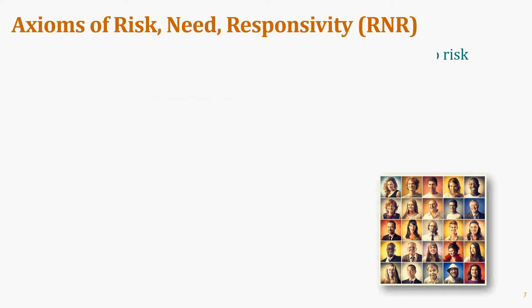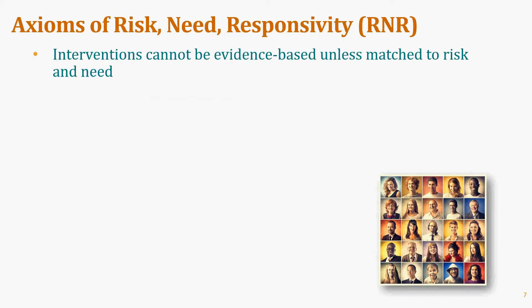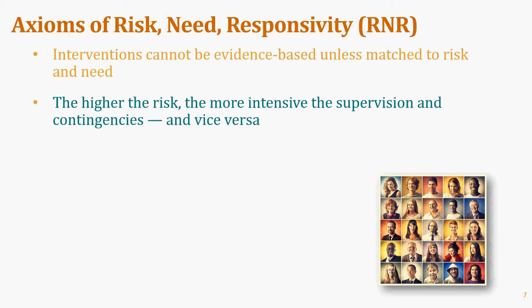The axioms of risk-needs-responsivity are as follows. Interventions cannot be evidence-based unless matched to risk and need — there is no treatment or program that works for everybody. If you give someone the wrong intervention, not only will they not get better, they will get worse. The higher the risk, the more intensive the supervision, contingencies, sanctions, and rewards must be. If you supervise a low-risk person too intensely or impose too substantial consequences, you will make them worse.